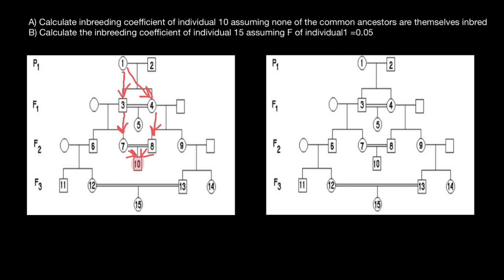So this is going to be our first loop. How many nodes do we have here? We count only those nodes excluding the individual for whom we are doing our calculation. So we have here one, two, three, four, five nodes.